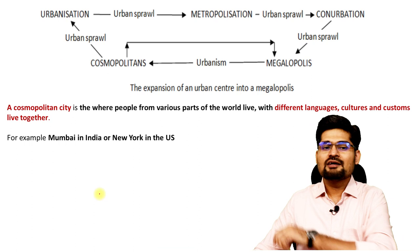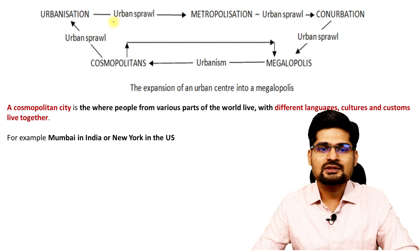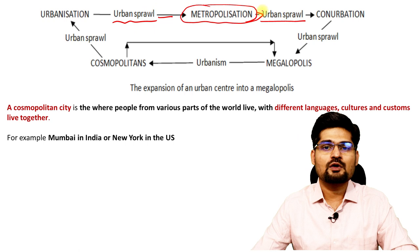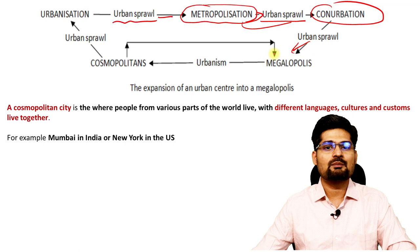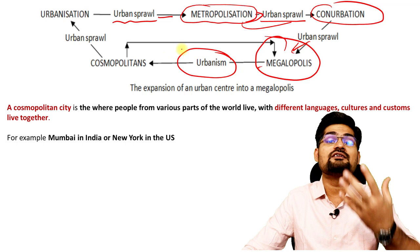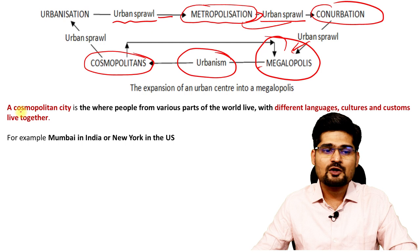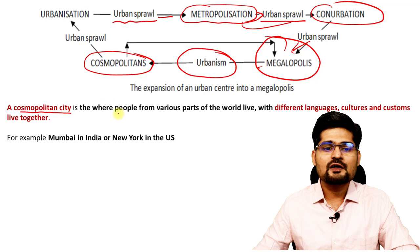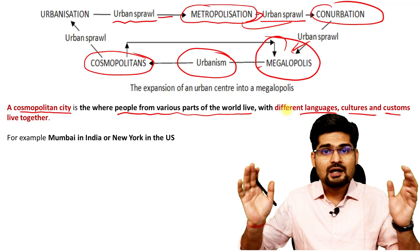In the process of urbanization, urban sprawl leads to metropolization, which leads to conurbation, and further urban sprawl leads to megalopolis formation. At the megalopolis level, the highest level of urban living and consumerism is reached — this is cosmopolitanization. A cosmopolitan city, close to megalopolis, has people from various parts of the world living together with different languages, cultures, and customs. Examples include Mumbai in India and New York in the USA.